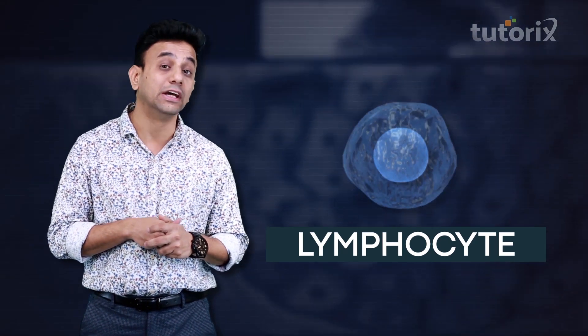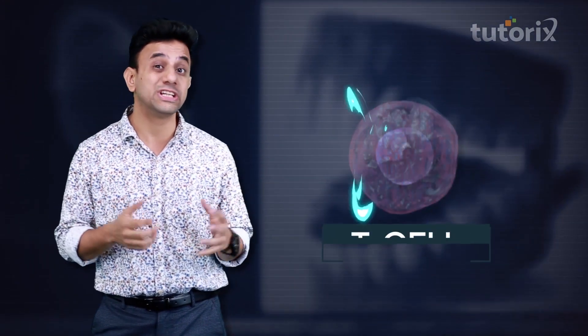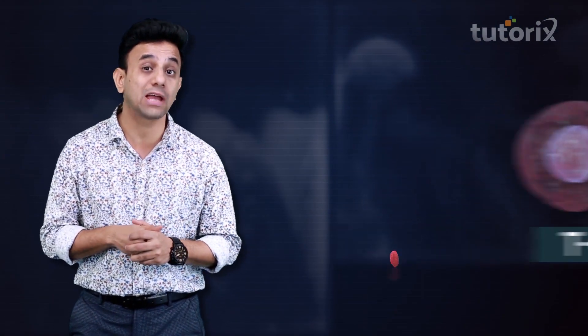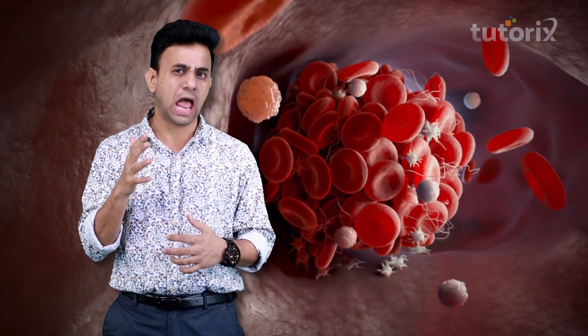During our childhood years, WBCs called lymphocytes enter the thymus gland and transform into T cells. Once the T cells have fully matured in the thymus gland, they leave and enter the different lymph nodes throughout the body, where they provide immunity and help fight diseases. This is why the thymus gland is so important in the development of immunity.